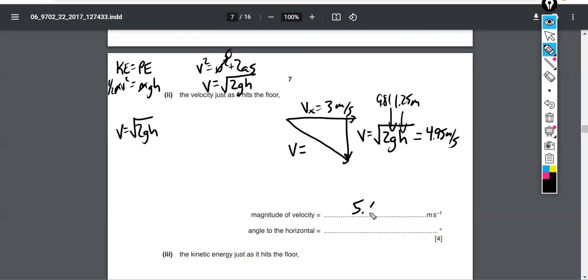And then to get this angle here, you can use the inverse tangent of opposite over adjacent. 4.95 over 3 inverse tangent, so you get 59 degrees for that one.